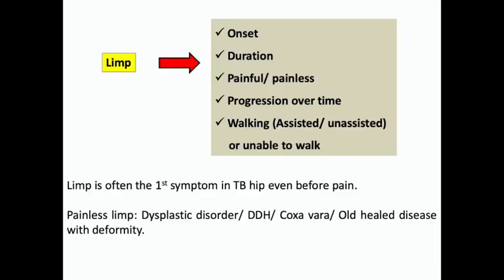The next important symptom is limp. We want to know the onset, the duration, and whether it is painful or painless. This one association separates the diagnosis into two groups — a painful limp and a painless limp give you different lists of diagnoses. Broadly, childhood limps are often painless and adulthood limps are often painful. Note the progression over time, what sort of walking the patient has, whether he needs assistance, and whether he is walking unassisted or unable to walk at all. A limp could be the first symptom in TB hip even before pain.